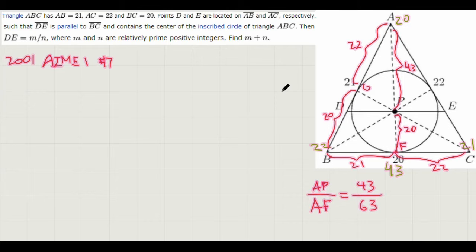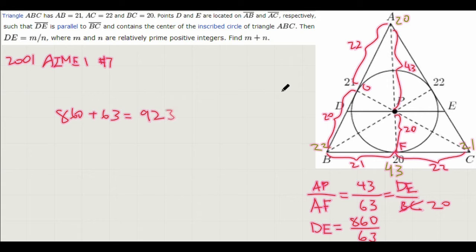And now we know that the ratio of DE to BC is also that. So we know that the length of BC is simply 20, so we can cross that out. This is 20. And we can multiply both sides by 20 to find that DE equals 43 times 20 is 860. You divide by 63. And since this is the most simplified form, we can put the fraction. We have M equals 860, N equals 63, and our final answer is 860 plus 63, which is equal to 923. And we're done.